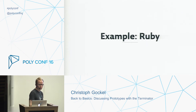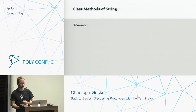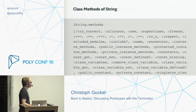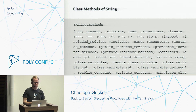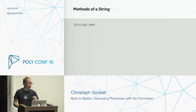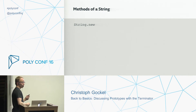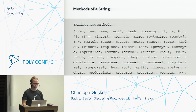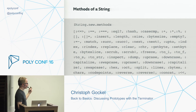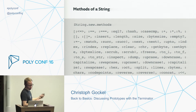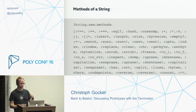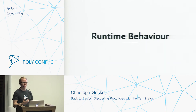To show the difference between classes and objects, let's use Ruby as an example. Ruby has a String class and you can ask this class what methods it has — you get back a list of methods you can call on the class, including 'new' to create new objects, and methods for constants, private methods, public methods, and so on. Then when you create a new string in Ruby, you can also ask this object for its methods, and you get back a different list — the methods you can actually call on a particular string instance: upcase, downcase, split, reverse, and so on.